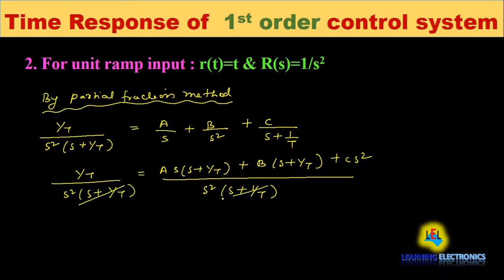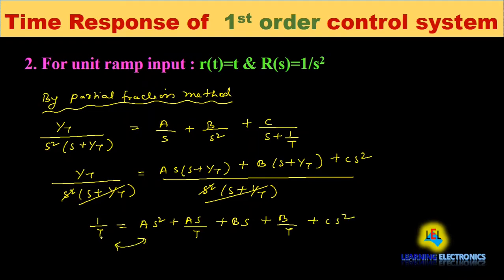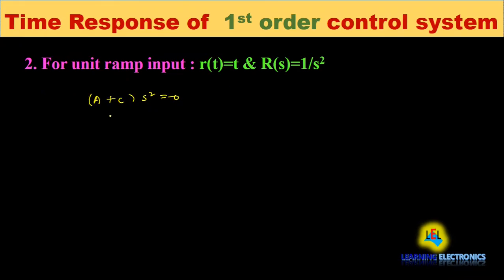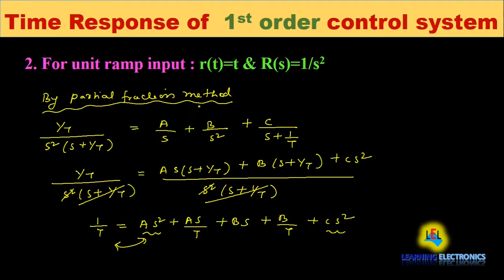The denominators cancel out, giving us 1/T = As² + As/T + Bs + B/T + Cs². Now we compare coefficients of both sides for s², s, and s⁰. For s²: A and C are on the right-hand side but no s² term on the left, so A + C = 0. Let this be equation (a).